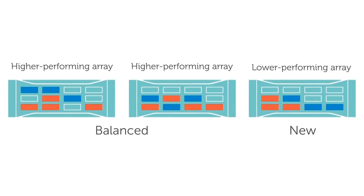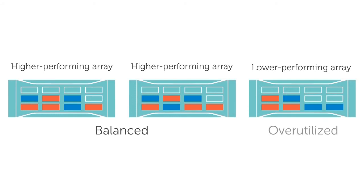After that, the performance load balancer will see that the new array, which is lower performing — perhaps it has 7200 RPM drives — is overutilized. Its latency has gone up because it's really not designed to have hot blocks on it.